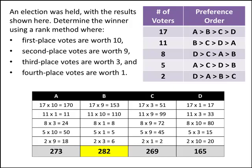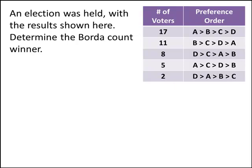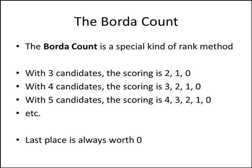Let's consider the next problem. An election was held — notice it's the same voter profile — and now we're asked to determine the Borda count winner. The Borda count is a special kind of rank method. With three candidates, the scoring is first place worth 2, second worth 1, third worth 0. With four candidates, it goes 3, 2, 1, 0. With five candidates, 4, 3, 2, 1, 0, and so on.